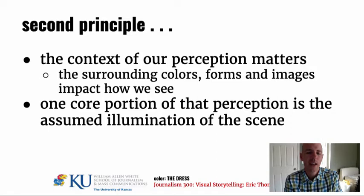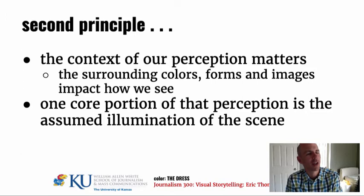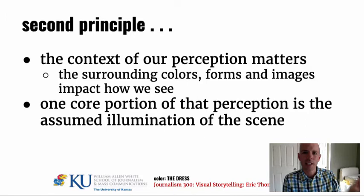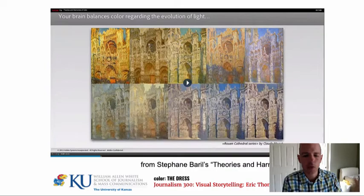Principle number two: one core portion of that perception is the assumed illumination of the scene. What does that mean? We talked in an earlier lecture about color temperature — when certain colors of light are projected onto things they take on a different look. Warm colors and cool colors have different effects on what we're looking at. Here's a great example from Stefan Burrill's lecture.